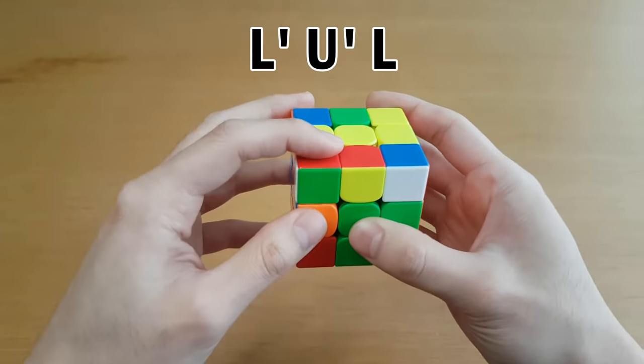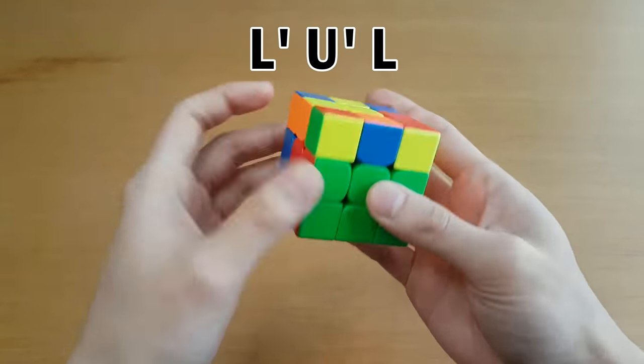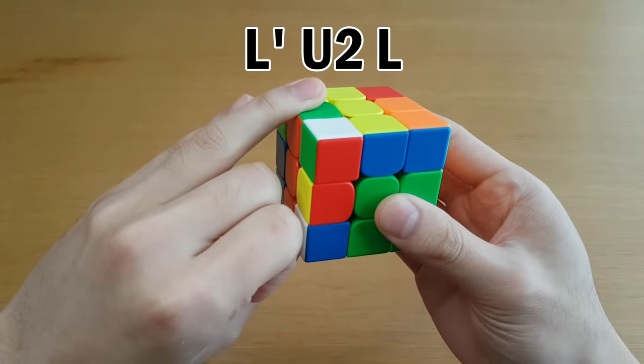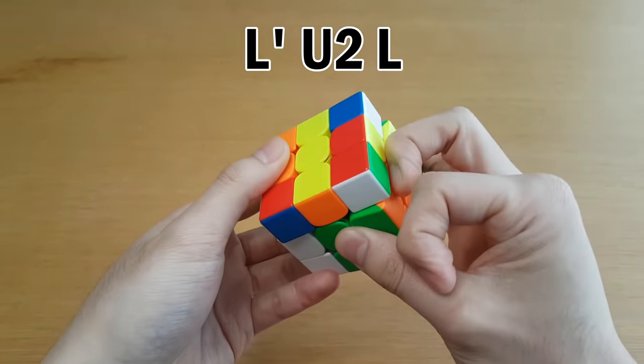Of course, same goes for the left side. You want to do it like this to insert it. If you're in a case where you have to do a U2 move, don't do it like this because you have to re-grip. Instead, do U2 with the other hand.